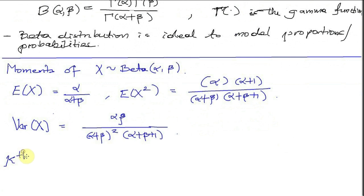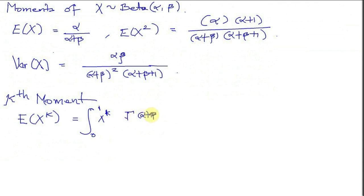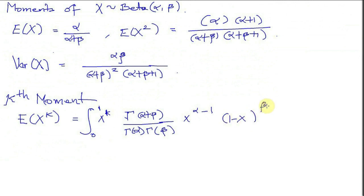I'm going to start with a general derivation of the kth moment of a beta distribution, then plug in 1 and 2 to show the expected value and second moment. The expected value of x to the power of k is the integral from 0 to 1 of x to the power of k times the PDF. I'll write the PDF in terms of the gamma functions: gamma of alpha plus beta divided by gamma of alpha times gamma of beta, multiplied by x to the power of alpha minus 1, times 1 minus x to the power of beta minus 1 dx.